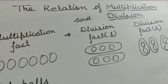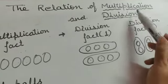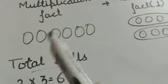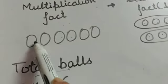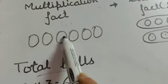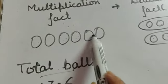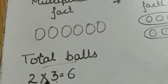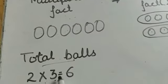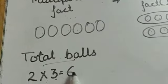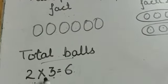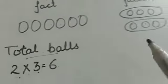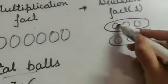The relation of multiplication and division. Suppose there are 6 balls: 1, 2, 3, 4, 5, 6. 2 into 3 is equals to 6. 2 ones are 2, 2 twos are 4, 2 threes are 6.